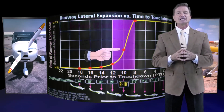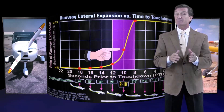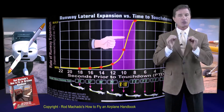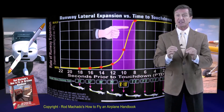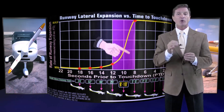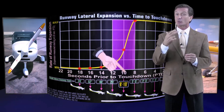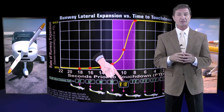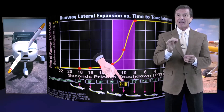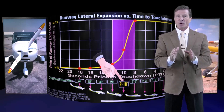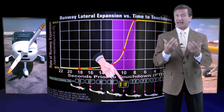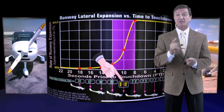Looking at the runway lateral expansion versus time to touchdown graph, you can see how the rate of runway expansion is the largest when you are 8 to 10 seconds away from touching down. And this expansion also occurs at a point where the airplane is typically around 10 feet above the landing surface. Said another way, the runway dramatically widens in your windscreen right at the point where you should typically begin the roundout followed by the landing flare. Now that is very convenient.